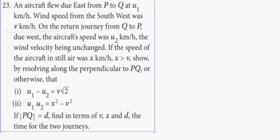An aircraft flew due east from P to Q at U1 kilometers an hour. I need to draw a picture. P, Q, U1 this way. Wind speed from the southwest was V. From the southwest means it's going where? Where's this wind actually going? It's going northeast.